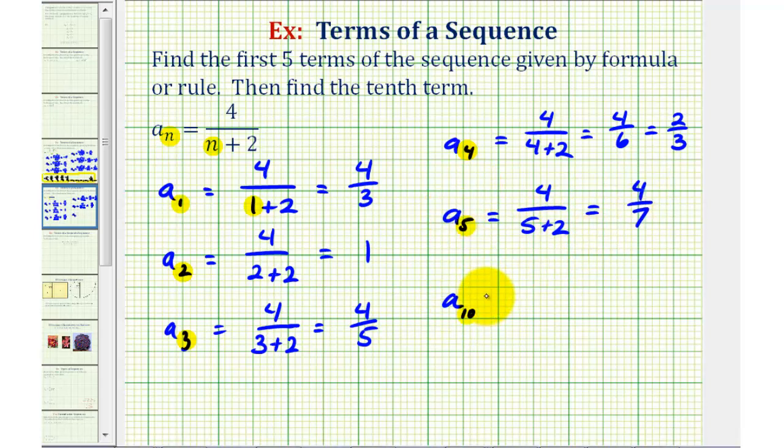And then finally for the tenth term, or a sub ten, we would have four divided by the quantity ten plus two, which would be four twelfths, which simplifies nicely to one-third.